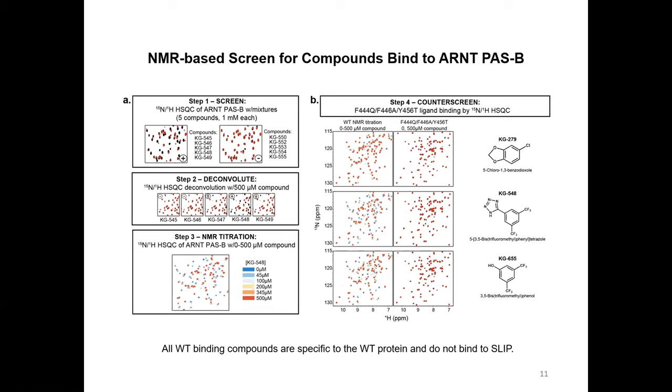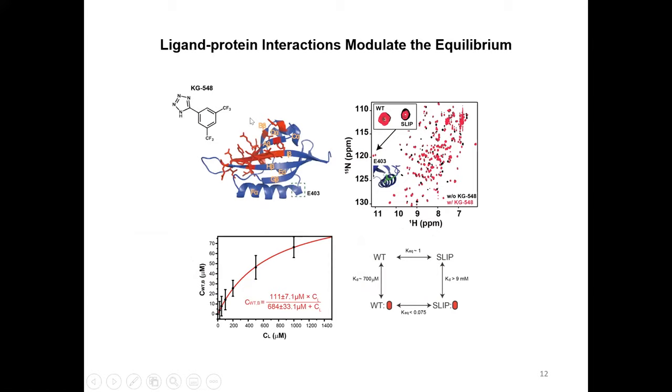Lastly, I want to talk about how we can use small molecules to regulate these conformational equilibria. We've done an NMR-based screen to identify compounds that bind to the wild-type ARNT PAS-B. This involves grouping compounds together, adding them to the protein, and looking for chemical shift perturbations. We identified positive ones and studied them with NMR titration experiments. We identified 10 ligands that could bind to the wild-type protein. We counter-screened these 10 ligands for their ability to bind to the triple mutant locked in the slip conformation, and none could bind, suggesting all these ligands are specific to the wild-type protein.